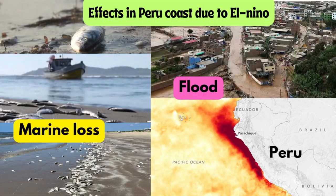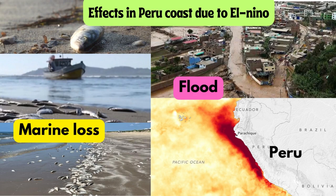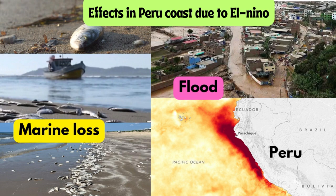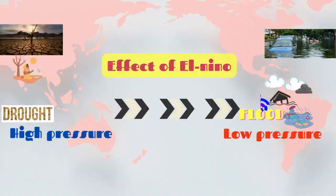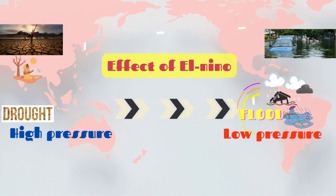Now let's talk about the impacts of El Niño. Effects in the Peru coast due to El Niño include marine loss, and sometimes flooding due to sudden temperature rises. People living in those places face a lot of difficulties. When El Niño occurs, it can bring about various disruptions in weather and climate patterns around the world.